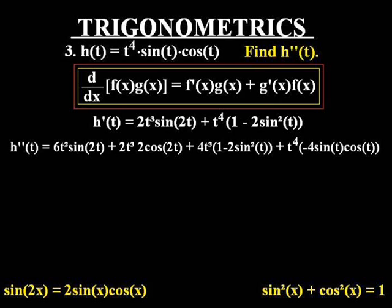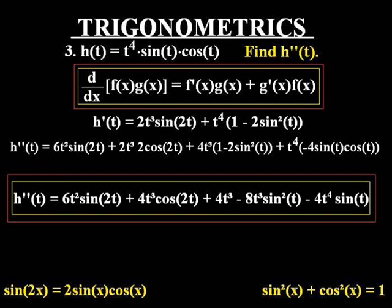Simplifying this, we get the simplified result of the second derivative, and that is h double prime t is equal to 6t squared sine of 2t plus 4t cubed cos of 2t plus 4t cubed minus 8t cubed sine squared t minus 4t to the power 4 sine of t. If you can do that all on your own without really too much help, then you're well on your way of utilizing the product rule properly and understanding the derivation of trigonometrics.